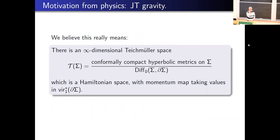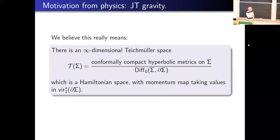For this audience, hyperbolic zero-metrics is perhaps a better name. You have a surface with boundary, there's a zero tangent bundle whose sections are vector fields vanishing at the boundary, and then it's hyperbolic metrics on that zero tangent bundle up to diffeomorphisms fixing the boundary. This is some kind of infinite-dimensional Teichmüller space, and this space should be a Hamiltonian Virasoro space whose moment map takes values in the dual of the Virasoro algebra. I'm going to define the Virasoro algebra in a moment.